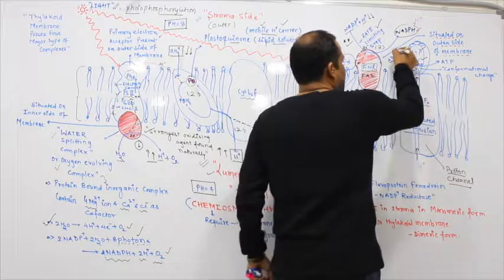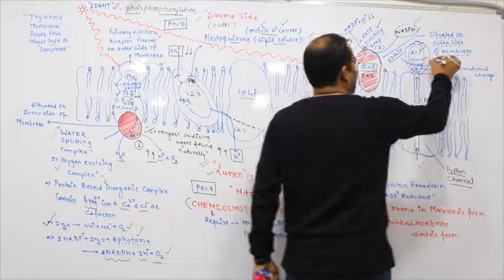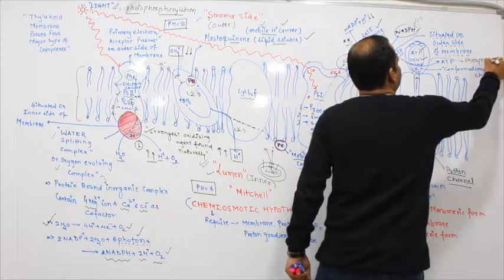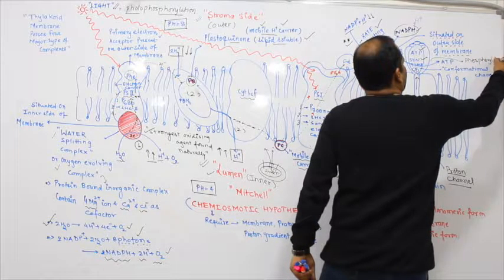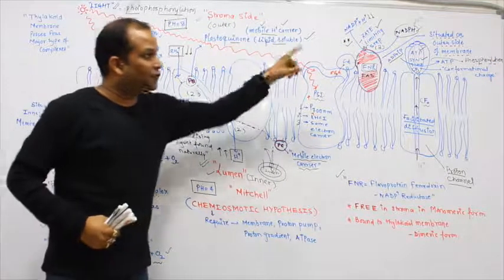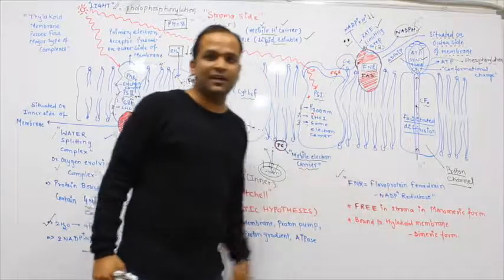This is the final process where phosphorylation occurs. This phosphorylation occurs because of proton gradient.